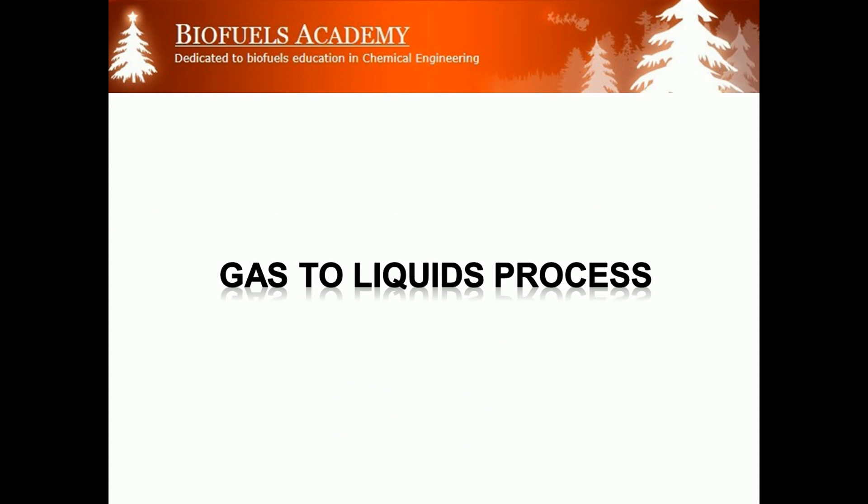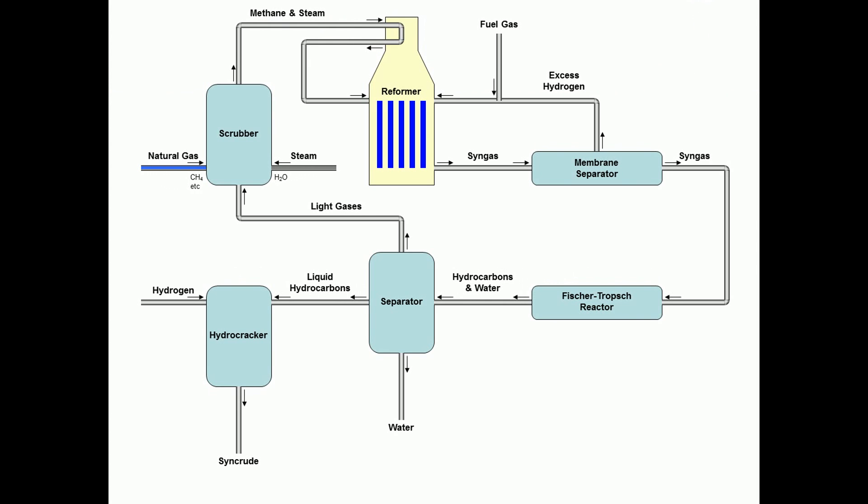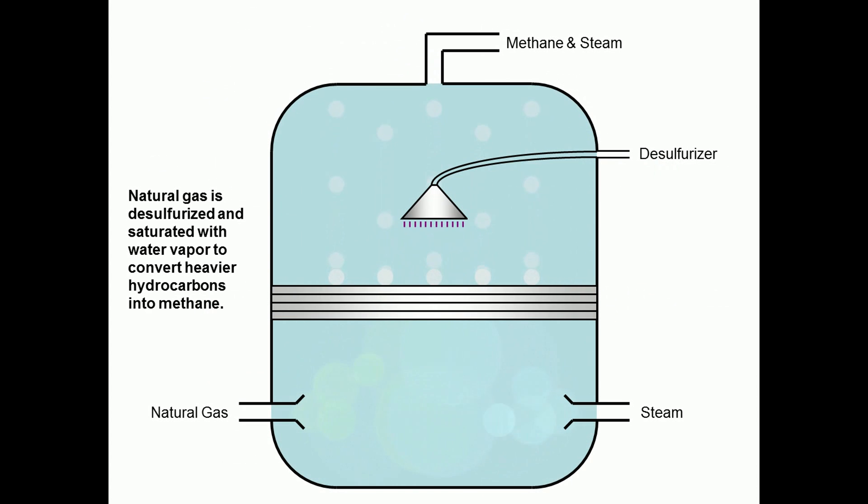In this video, we want to illustrate the operation of gas-to-liquid process. The natural gas and steam are sent to a scrubber in the first step. In the scrubber, the natural gas is desulfurized and saturated with steam to convert heavier hydrocarbons into methane.